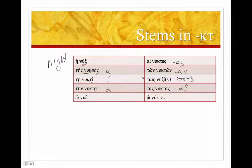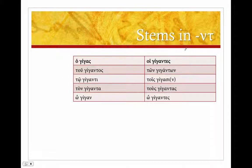Now, if that stem ends in nu tau, some different things happen. So we'll start with ho gigas, giant. You'll notice our word gigantic is derived from this.